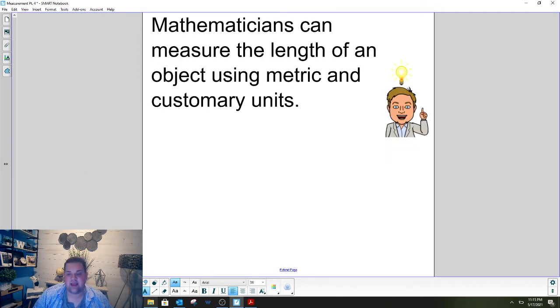It is time now to begin our mini lesson. So today in mini lesson we're going to be talking about how mathematicians can measure the length of an object using metric and customary units. Yesterday we worked with metric units and today we're going to continue working with those metric units and we're going to look at three different lines today and we're going to be able to write the length of that line in three different ways by the end of our video today.